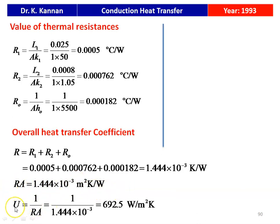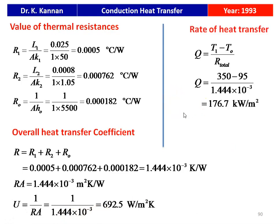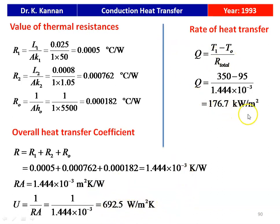The overall heat transfer coefficient U = 1/RA. So U = 1/(1.444×10⁻³) = 692.5 W/m²·K. The rate of heat transfer = (T1 - To)/total resistance = (350 - 95)/(1.444×10⁻³) = 176.7 kW/m². The overall heat transfer coefficient is 692.5 W/m²·K and the rate of heat transfer is 176.7 kW/m².